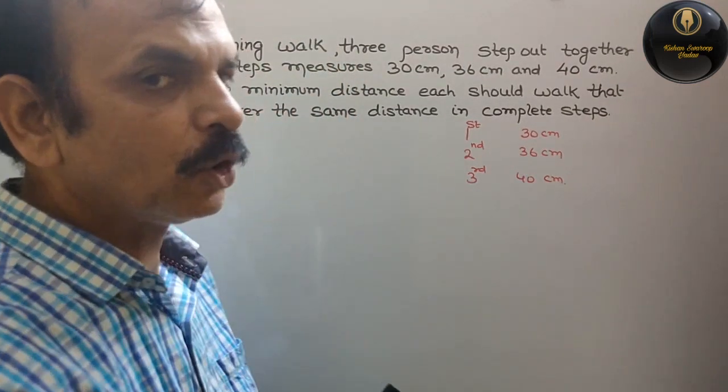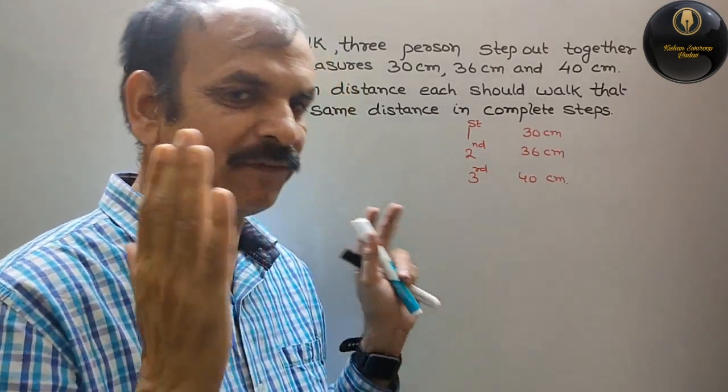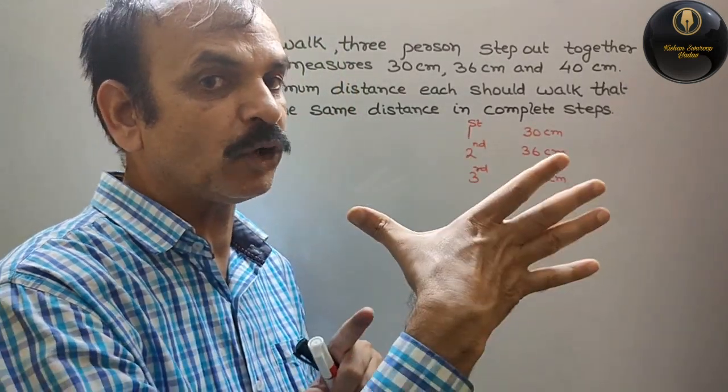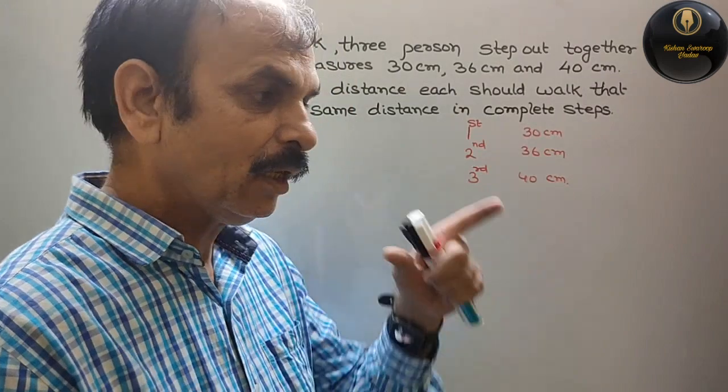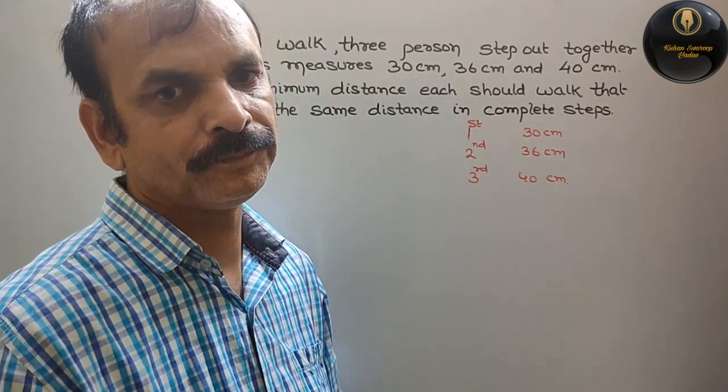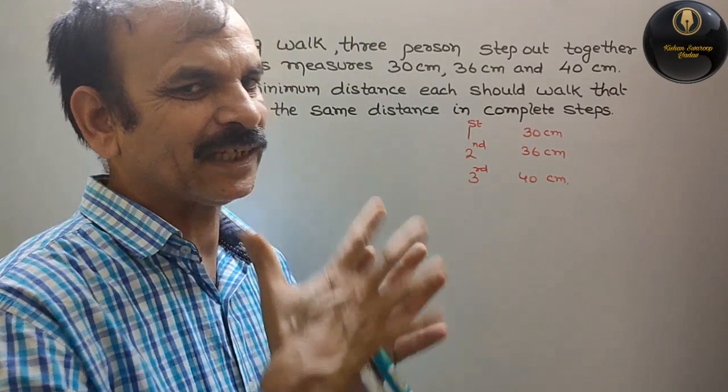So now we have to travel equal distance. And the step is complete. Complete means full step. This is half step.